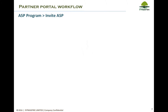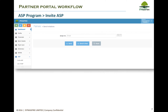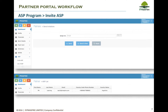For the ASP Program, country-specific exclusive Partners will see the ASP, Authorized Solutions Provider, module on the left menu. Through this module, the Partner will be able to invite new Partners by sending an email carrying a unique referral link. The Partner will also be able to see the list of registered Partners from the list of ASP function.